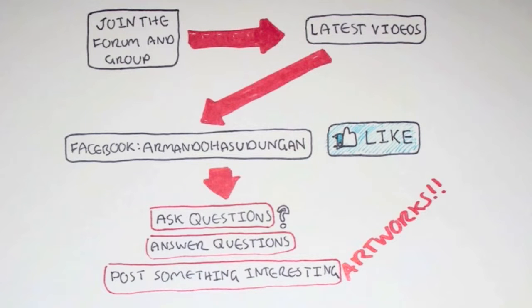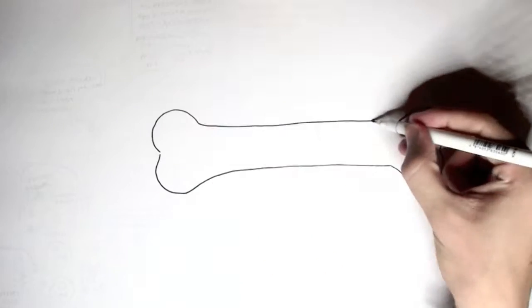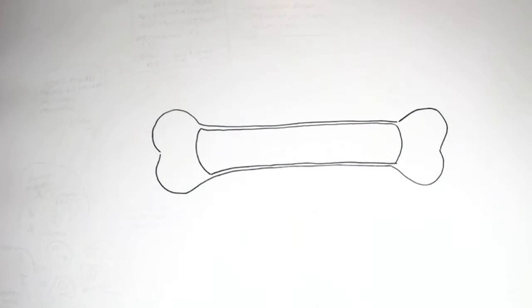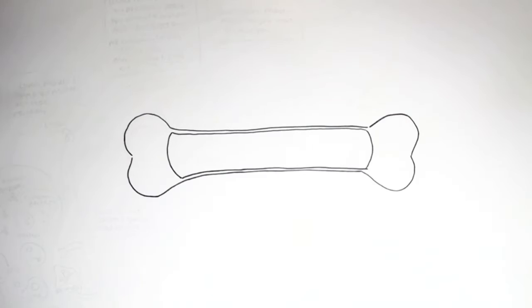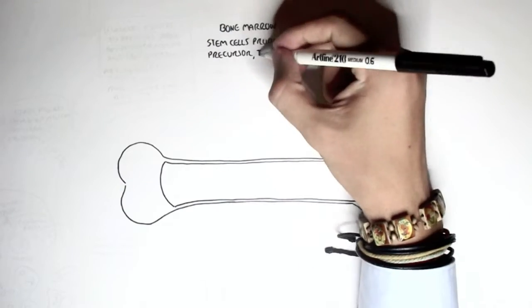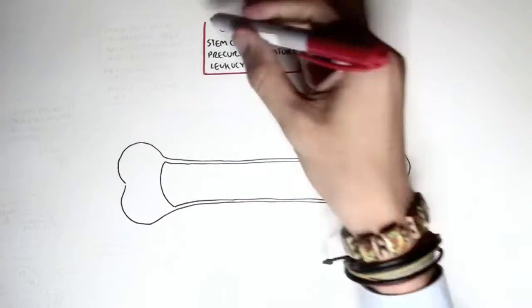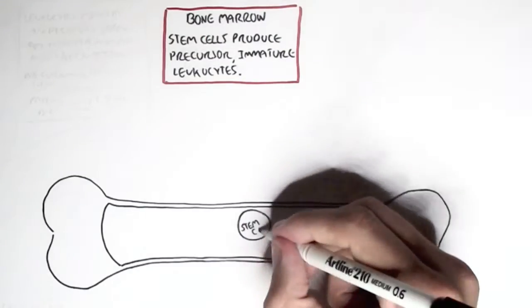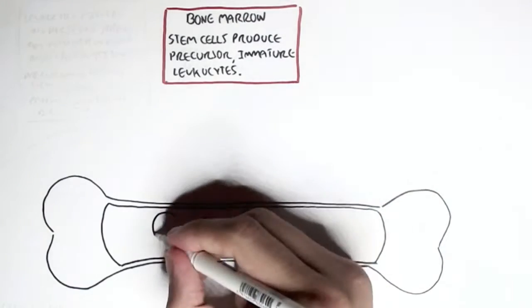In the previous video, the part one, we talked about the immune cells and how they arise from the bone marrow, specifically from the cells in the bone marrow known as the pluripotent stem cells. These pluripotent stem cells divide and give rise to different types of cells, different types of leukocytes.